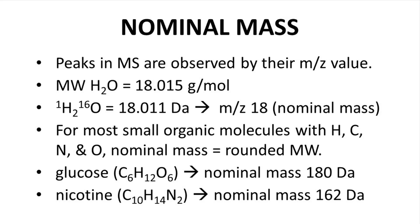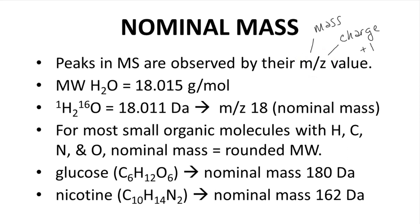Molecules and fragments in mass spectrometry are observed based on their m/z values. z, the charge, is generally plus 1, and m is the mass of the ion. Technically, mass is the sum of the atomic masses of every atom in the ion. Often the observed m/z is reported as a number rounded to its nearest integral value.